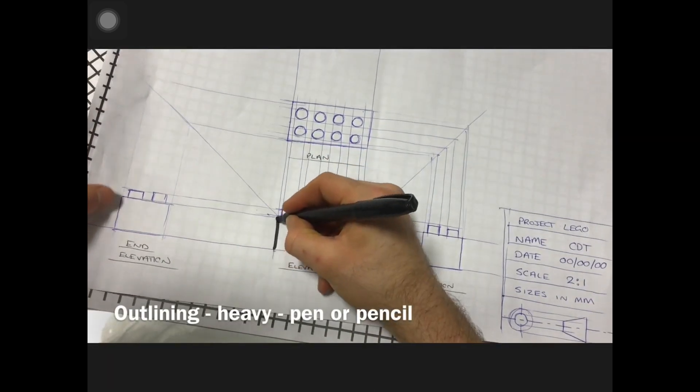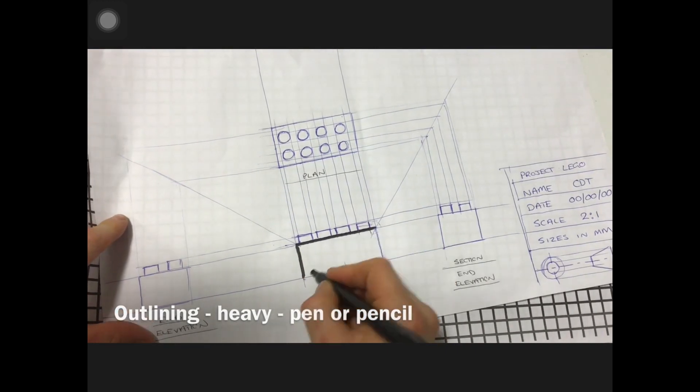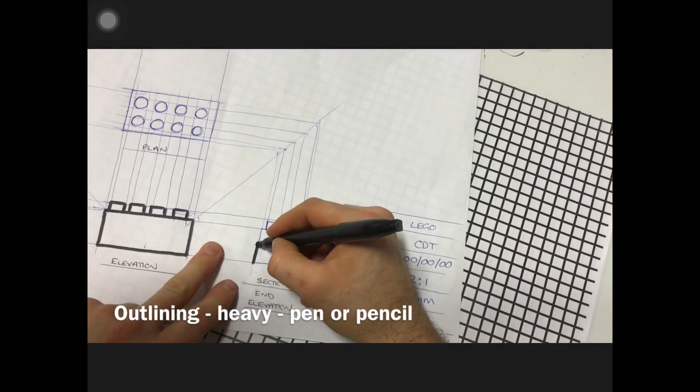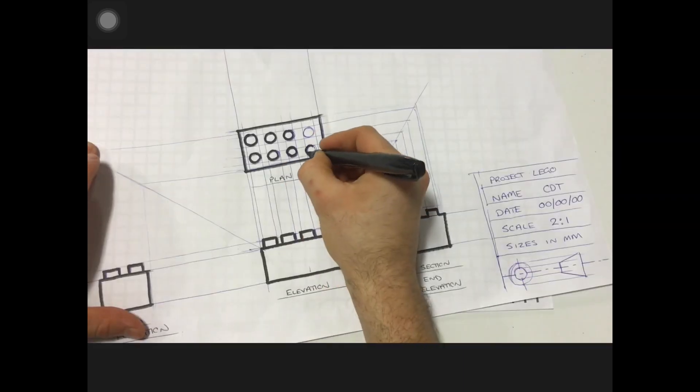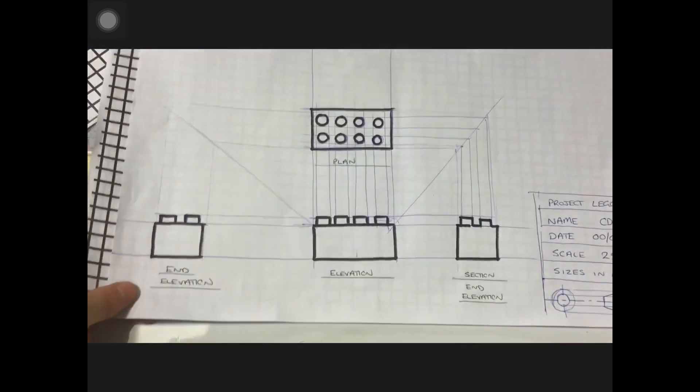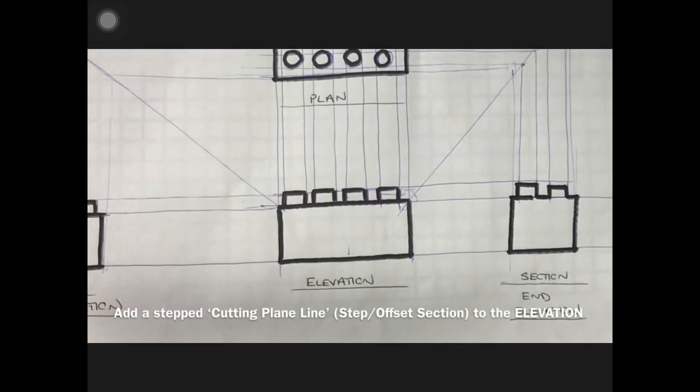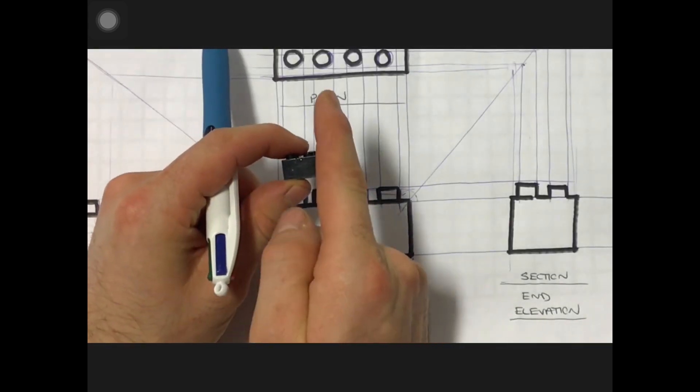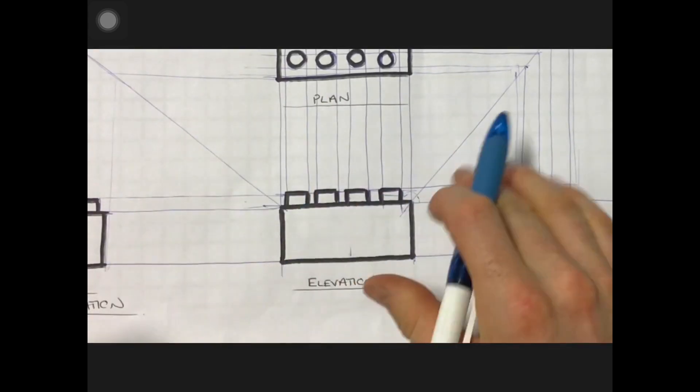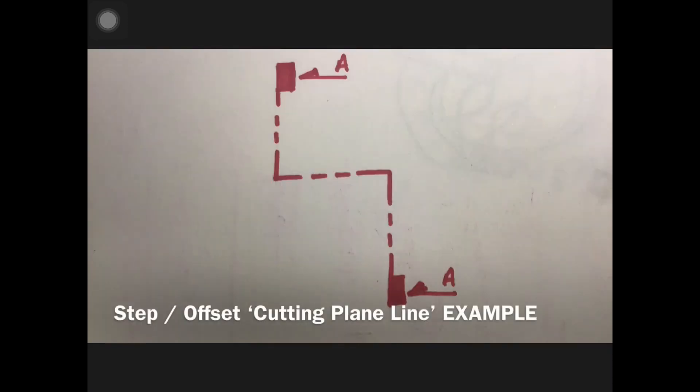So let's take the pen and just begin to actually outline. Before, what we're looking at just now is what's called a step section view. Instead of cutting through the object once, you cut through the object twice - cut down and then across.